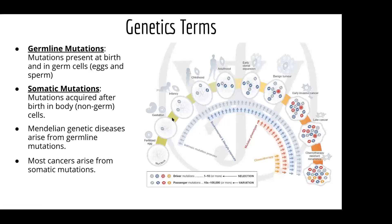As you get older you get more of these mutations, and then it just takes a particular event — like one key mutation that pushes a benign tumor over into invasive cancer.